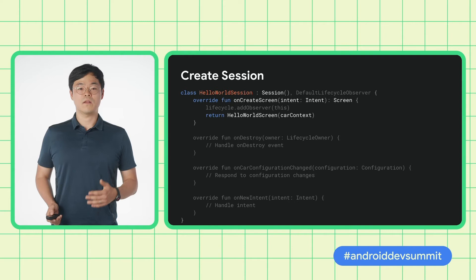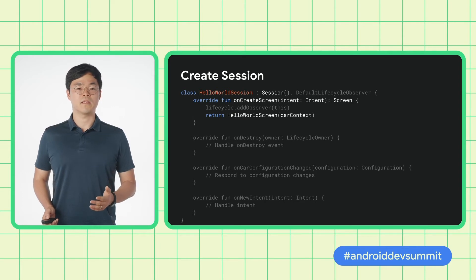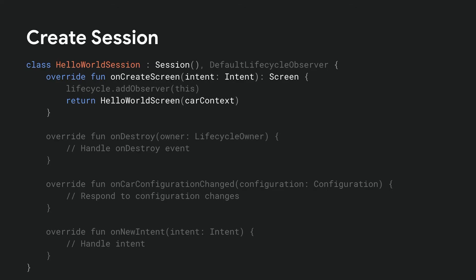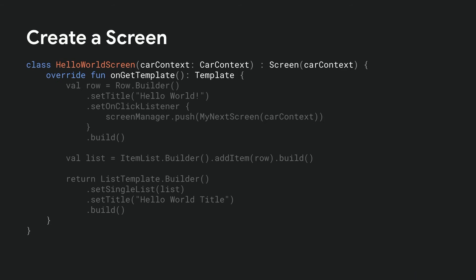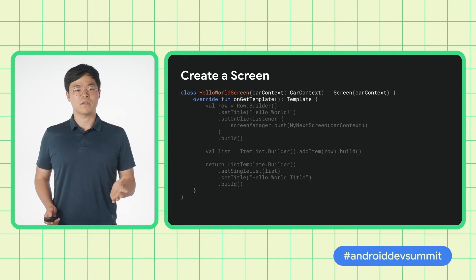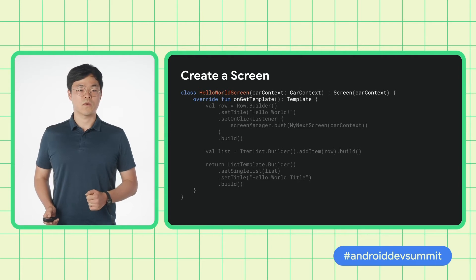Next, we create HelloWorldSession. Session is the object that returns the first screen to be shown when the app is opened in the car screen. Here, we return HelloWorldScreen, which we will revisit in later slides. Session also receives intents as well as callbacks on lifecycle and configuration changes. Next, we create HelloWorldScreen. A screen object contains the template and the metadata that we want to show in the car screen. We construct and return a template object in the onGetTemplate method. Also, screen has access to the screen manager object that you can use to push and pop screens.